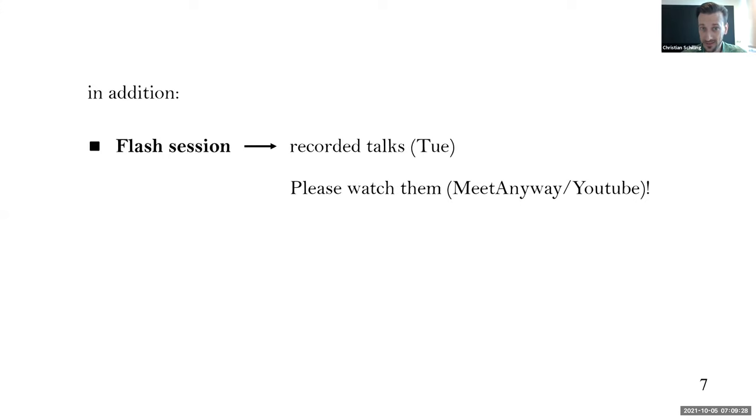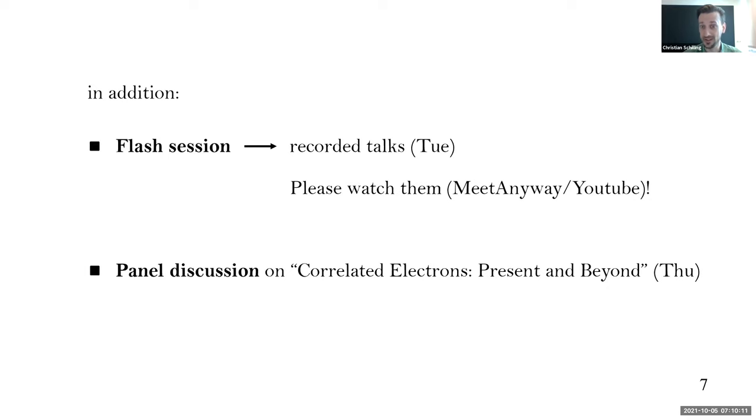What's also crucial to stress is that we have two additional events. We're going to have a flash session today between the first and second sessions. This should provide the opportunity to all those who submitted a title and abstract but could not be upgraded to a live talk. It's really important that participants attend this flash session and check out the recorded talks on MeetAnyway or YouTube. A number of contributed speakers spent enormous effort to record themselves for fifteen minutes. The second exciting event is a panel discussion on the present state-of-the-art and future open challenges of the electron correlation problem, happening on Thursday. On our website, you can check out the entire schedule with all the extra information.